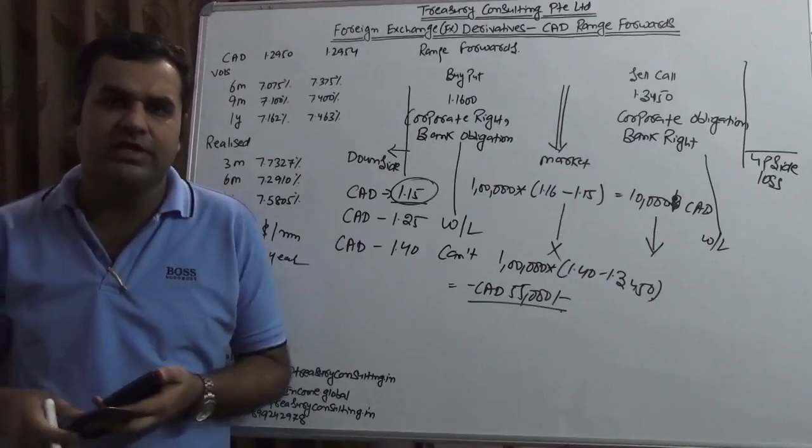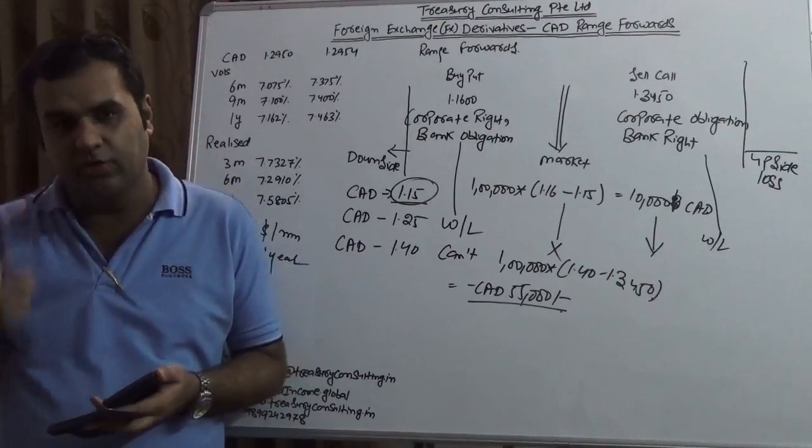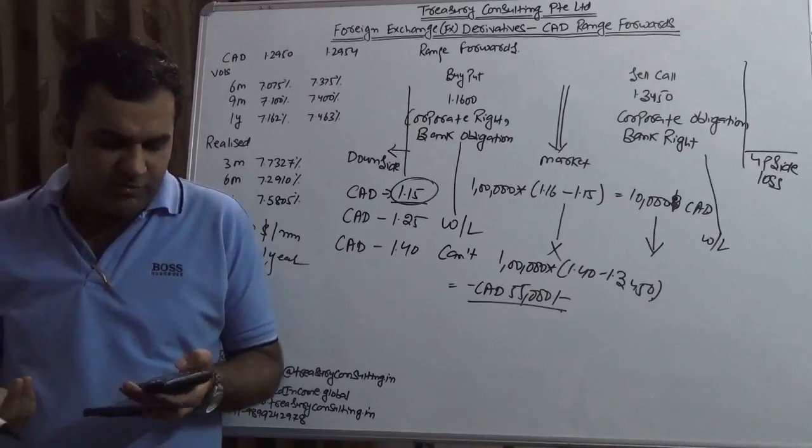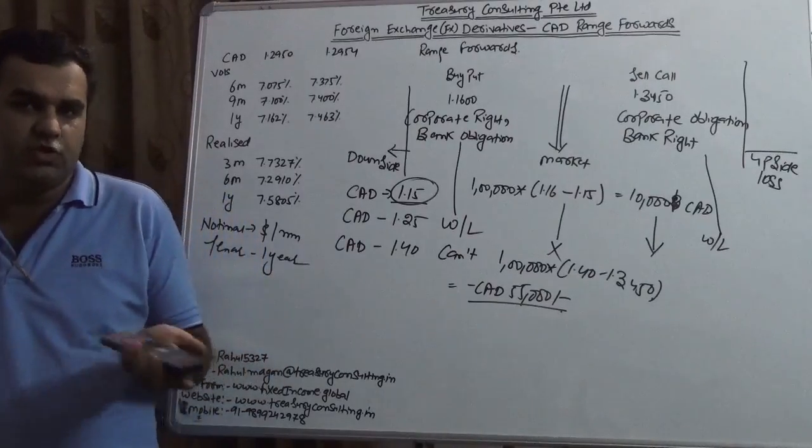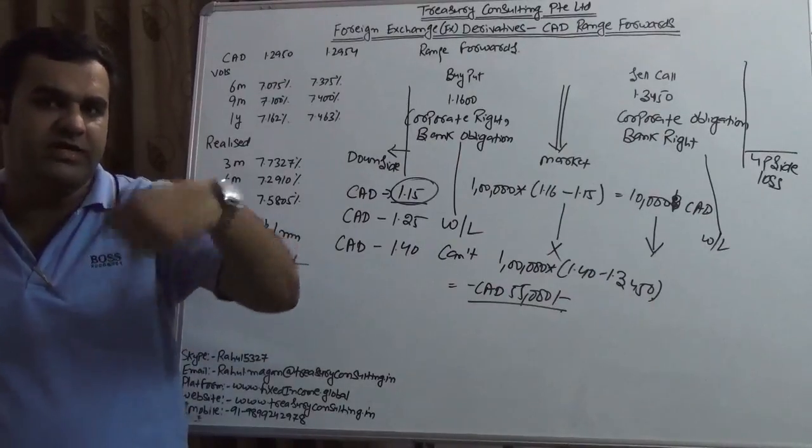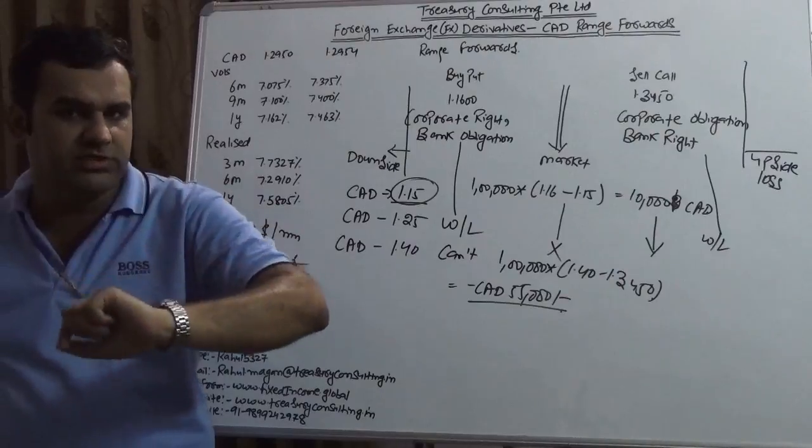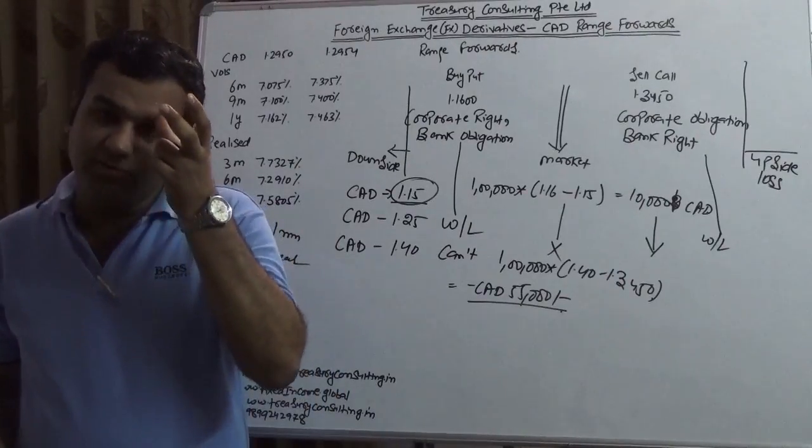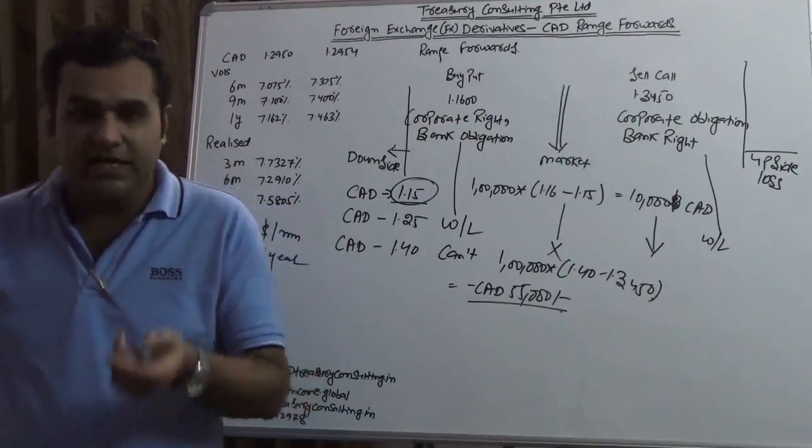So all the Canadian exporters watching this video, we have a request for them. Do not take a forward contract as of now. First of all, the forward premiums are negative. You are surely going to be losing that. So if you're going to hedge one year down the line, you're surely going to be losing. So it is better you take a position in an option contract where you would be gaining. You would be more or less spot neutral.